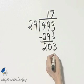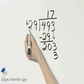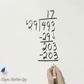7 times 9 is 63. Write down the 3, carry the 6. 7 times 2 is 14. 14 plus 6 is 20. No remainder.